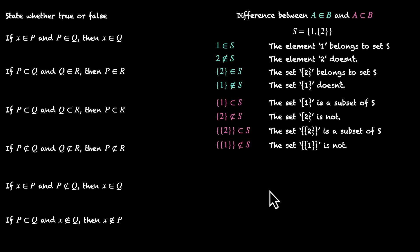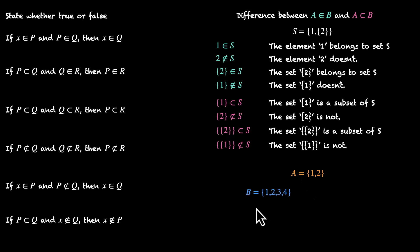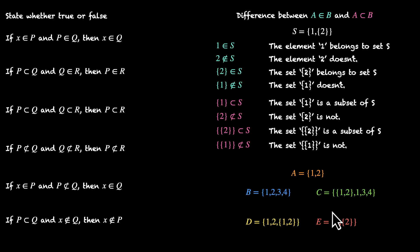Now let's practice what we've learned. We have set A, which has two elements: 1 and 2. We'll compare A with four more sets: B, C, D, and E. Now pause the video and figure out which of these sets A belongs to, and which of these sets A is a subset of.